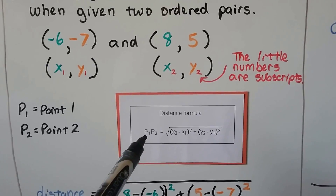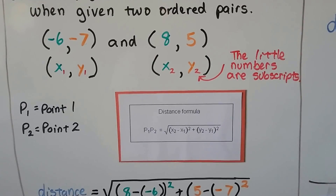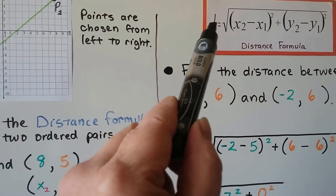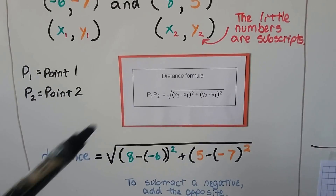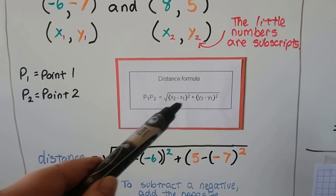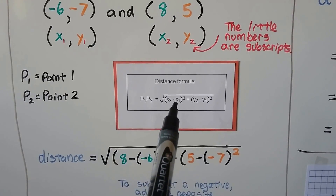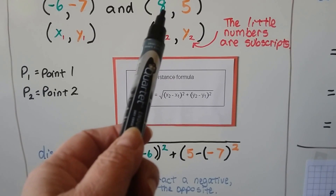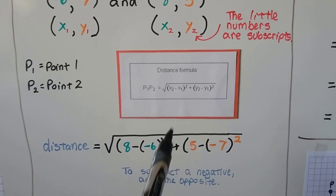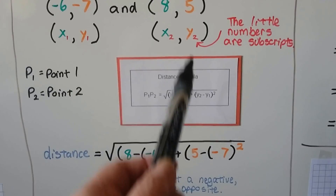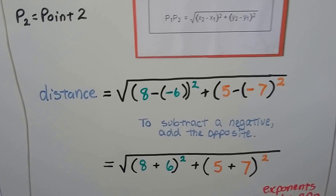The distance formula is written as the distance between P-sub-1 and P-sub-2, meaning point 1 and point 2. Sometimes you'll see just a D there. We plug in our numbers — x-sub-2 is 8, x-sub-1 is negative 6, so we do 8 minus negative 6, squared. Then y-sub-2 is 5 and we subtract negative 7, squared.